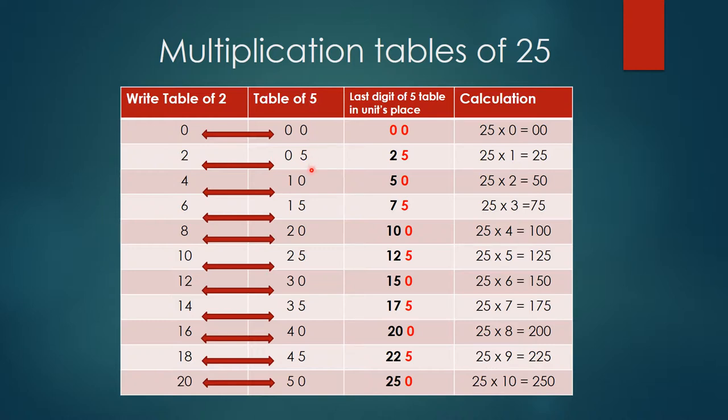...we are taking 5 zeros are 0, 5 ones are 5, 5 twos are 10, 5 threes are 15, 5 fours are 20, 5 fives are 25, 5 sixes are 30, 5 sevens are 35, 5 eights are 40, 5 nines are 45, 5 tens are 50. Okay, this is very simple.